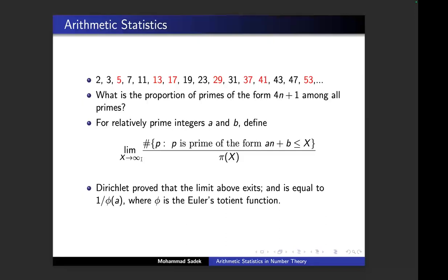The Euler totient function counts all integers up to a that are relatively prime to a — those with no common divisors with a. Back to our question: to count all primes that look like 1 modulo 4, according to Dirichlet this proportion is 1 over φ(4), which is one half. So half of the primes look like 1 modulo 4, and half look like 3 modulo 4 — half are red, half are black.